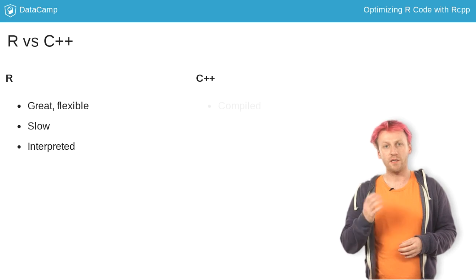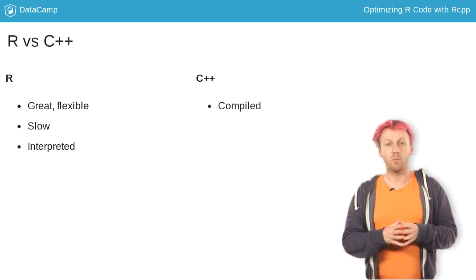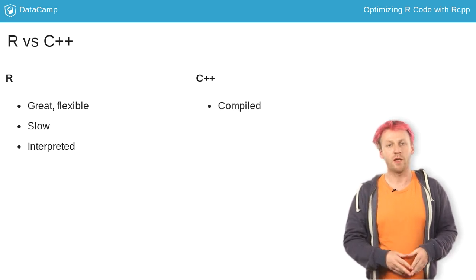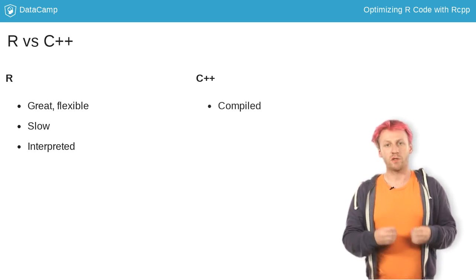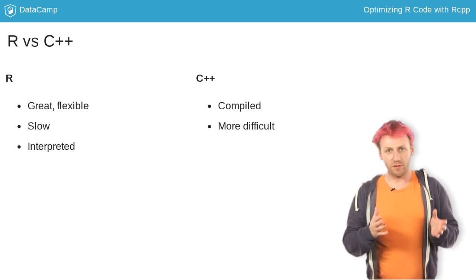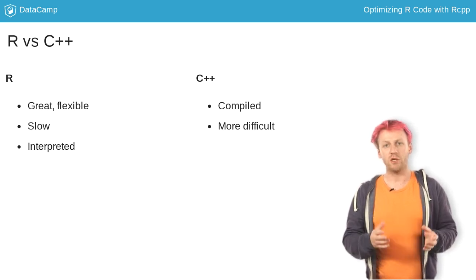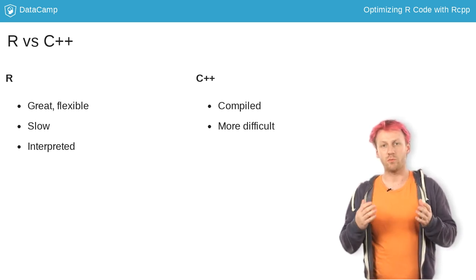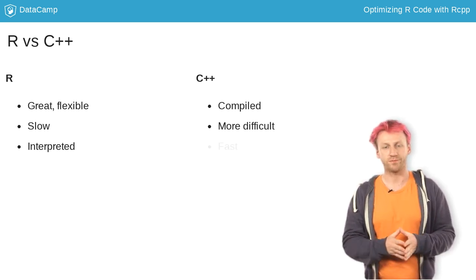On the other end, C++ is a compiled language. The C++ compilers do a great job of translating C++ statements into machine code that runs much faster.